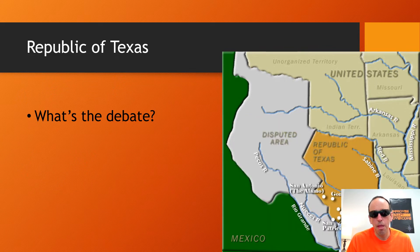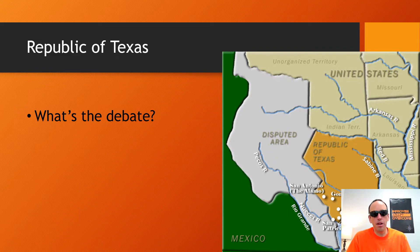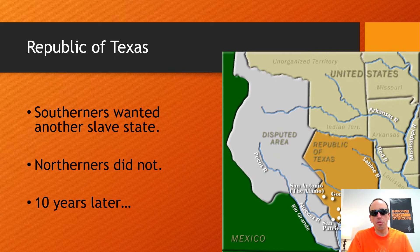What's the debate about annexation? Free or slave state. Remember the Missouri Compromise — Missouri came in balanced by Maine — because neither the North nor the South wanted the other side to have too much power in Congress to pass laws promoting or banning slavery. That debate is going to keep Texas out of the Union for about ten years. Southerners wanted another slave state; Northerners did not.